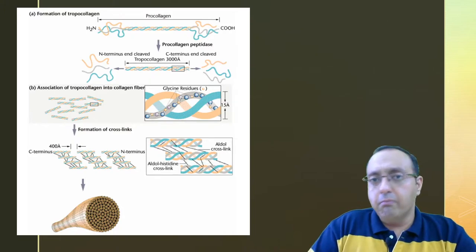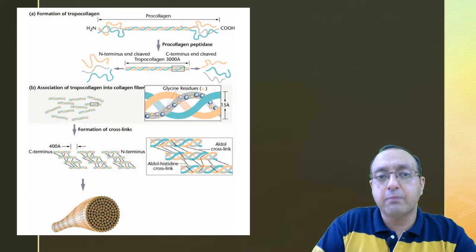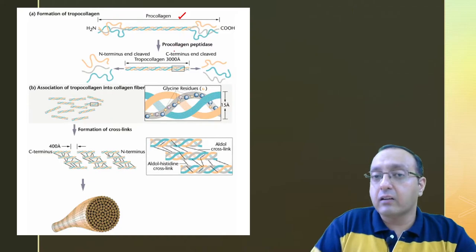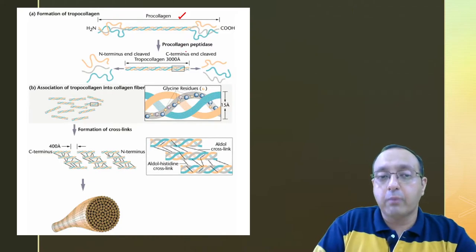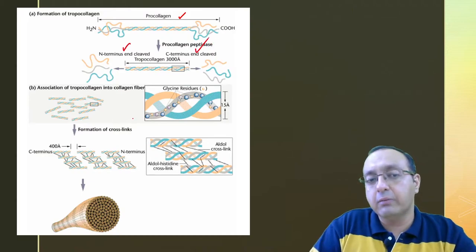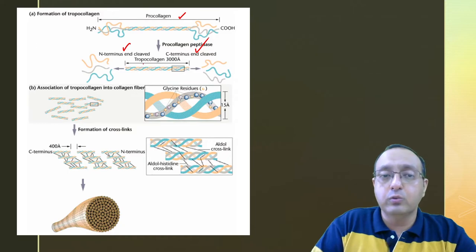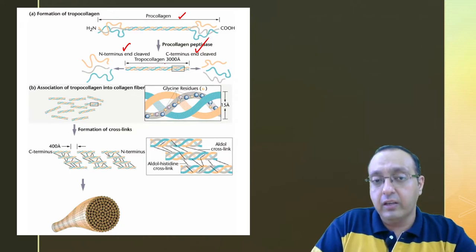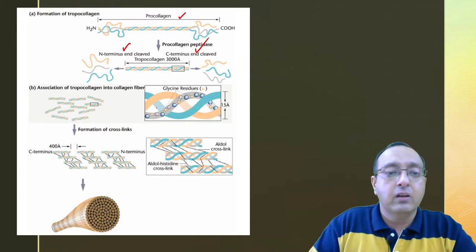So how is collagen made in the cell? Collagen is made just like another protein. First, it is synthesized as a procollagen. And these procollagen molecules are chopped off by procollagen peptidase, which removes some of the amino acids from the N-terminus and C-terminus. And it leads to formation of the single molecule, which is known as tropocollagen. This is about 3000 angstroms in length.